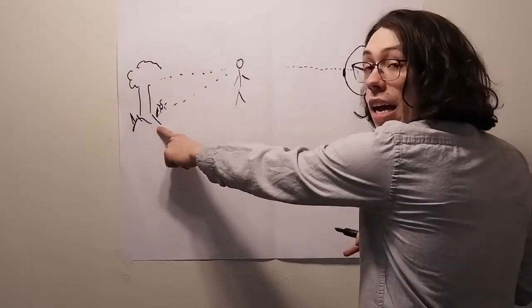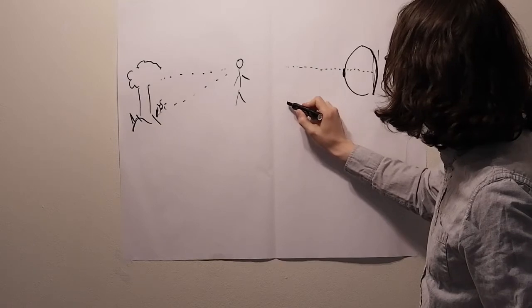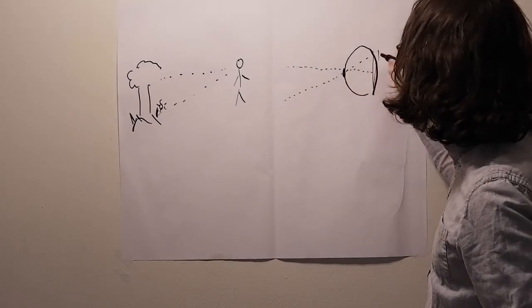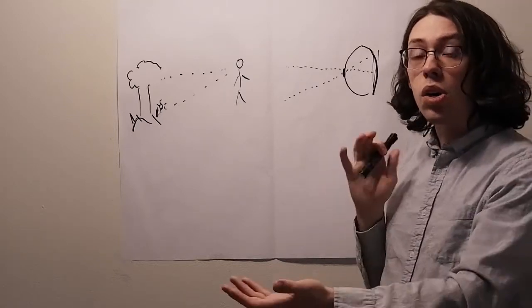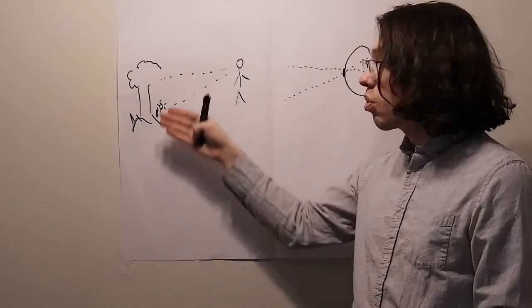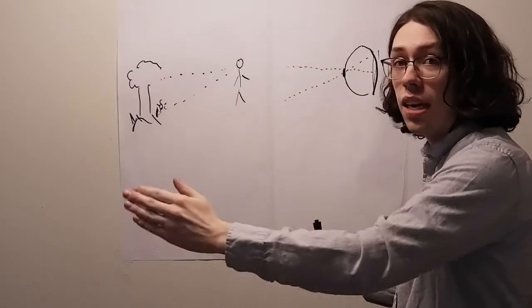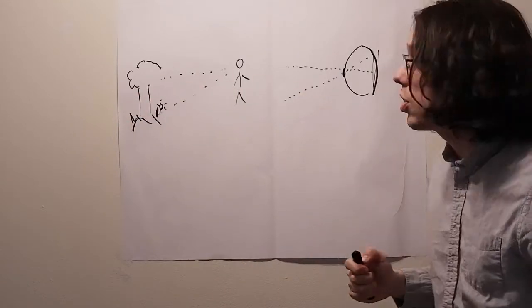But the light from the bottom of the tree is traveling in a straight line and it ends up on the top of the back of my eye. And this also works side to side. So the right side of the tree ends up on the left side of my eye, and the left side of the tree ends up on the right side of my eye. So you have a completely inverted image.